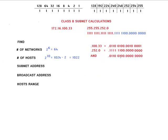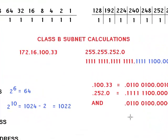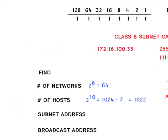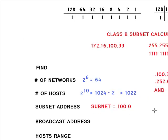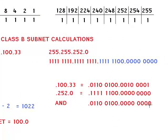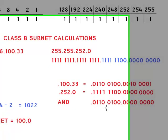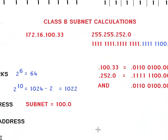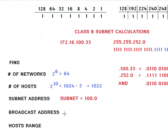So in the AND operation you can only get a one when there are two ones. When you convert this result to decimal it gives you 100.0. So the subnet address is 100.0. During a test you cannot use a calculator, so you have to do this by hand — but it works out to 100.0.